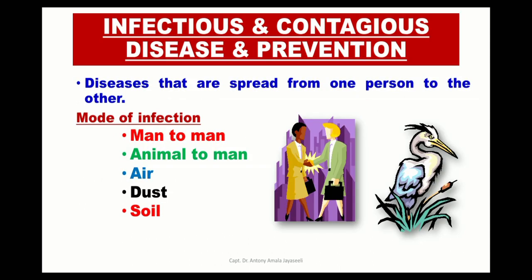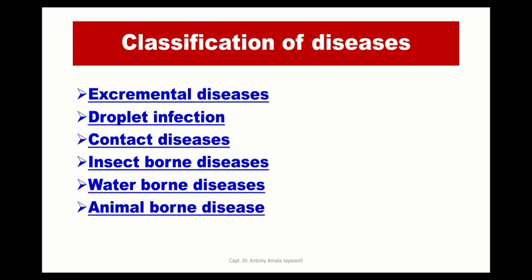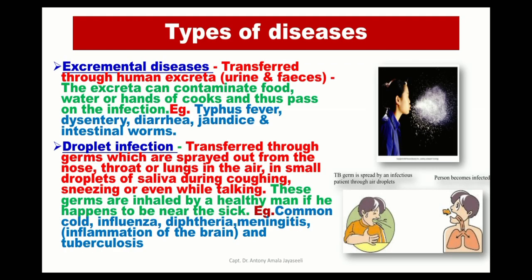Moving on to infectious and contagious diseases and their prevention. Diseases spread from one person to another — from man to man, animal to man, or from air, dust, or soil. They can be classified into six types: excremental diseases, droplet infection, contact diseases, insect-borne diseases, water-borne diseases, and animal-borne diseases. Excremental diseases are through excreta contamination of food and may cause typhus, dysentery, diarrhea, jaundice, and intestinal worms. Droplet infection spreads from the nose, throat, or lungs while coughing, sneezing, or even talking. Examples are common cold, influenza, diphtheria, and meningitis.